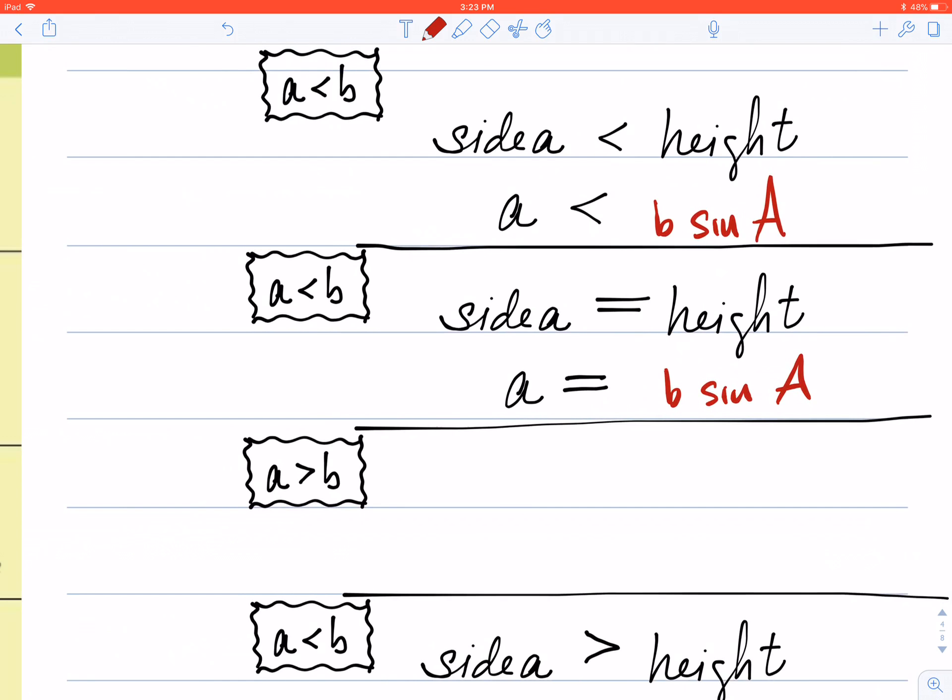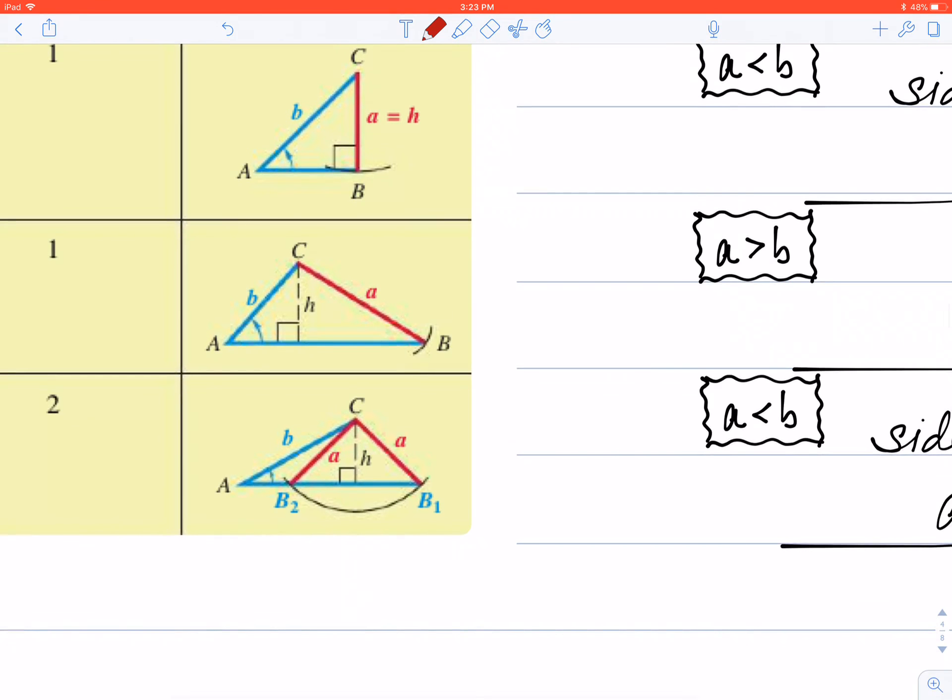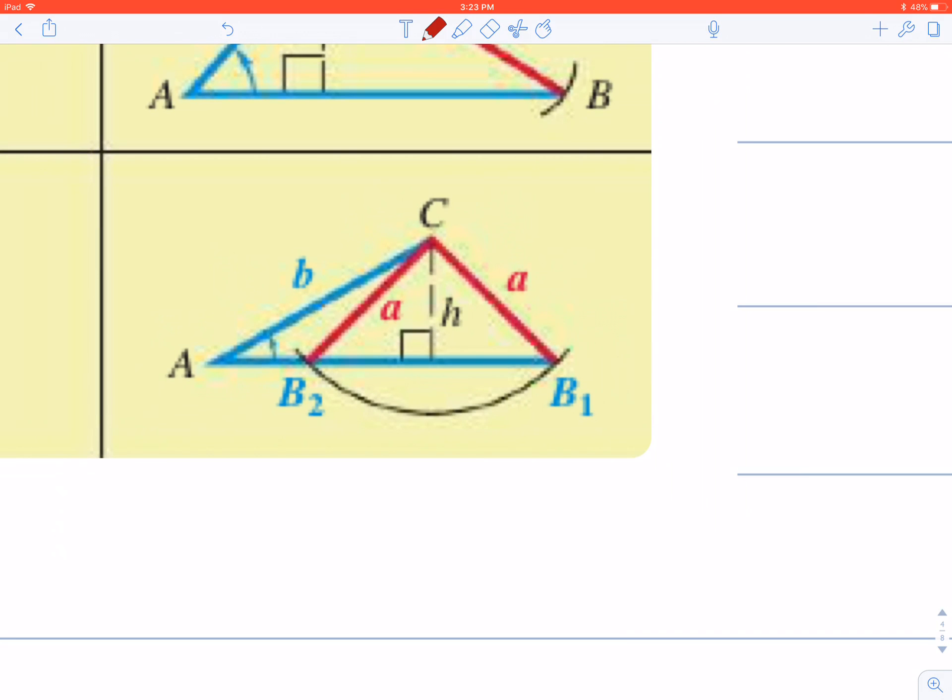Now, for a moment, can you please skip over the third case? And I'd like for you to jump down to the fourth case, this one right here. So once again, we're comparing side a to the height of the triangle. If you look at this as side a, you'll notice that side a is longer than the height of this triangle.